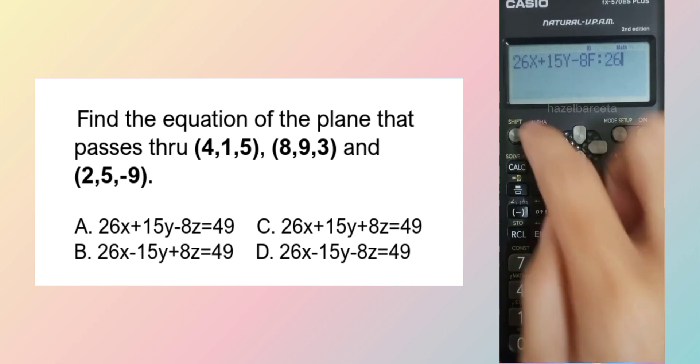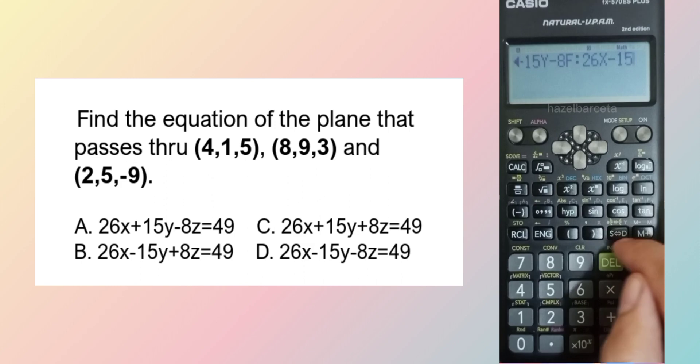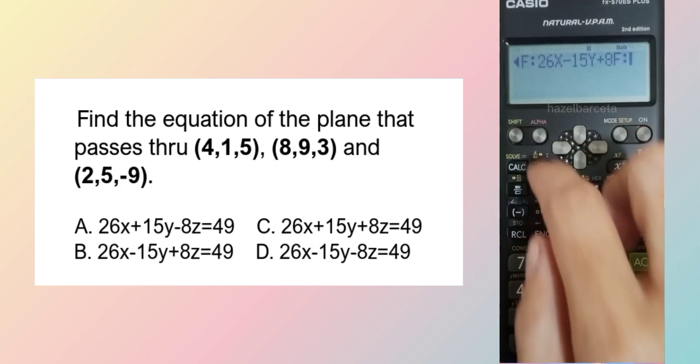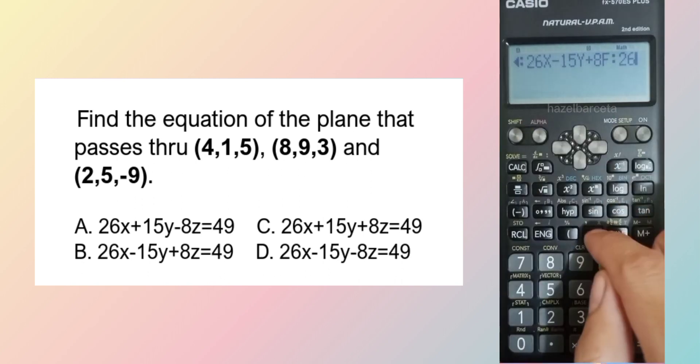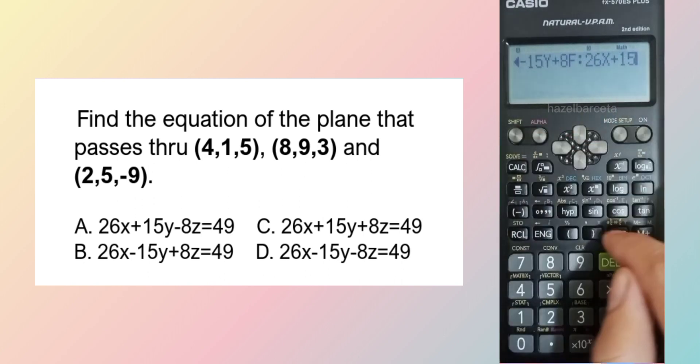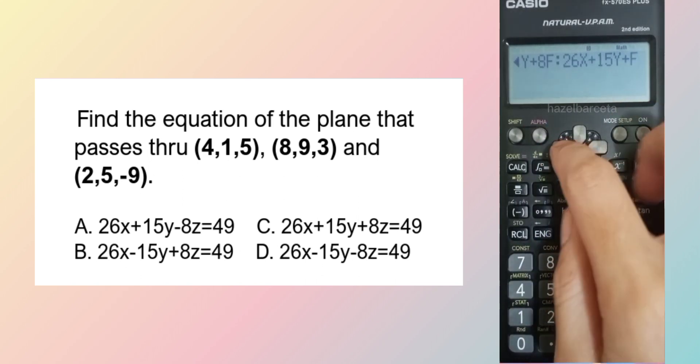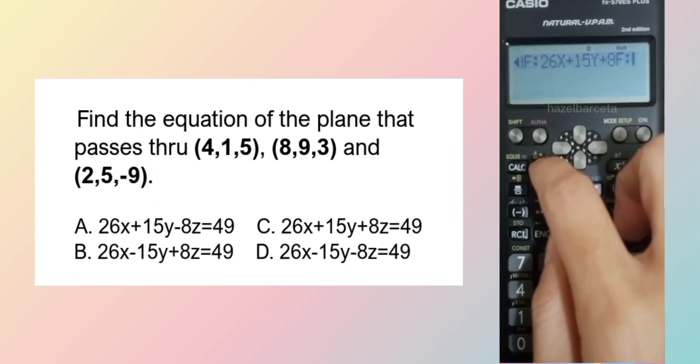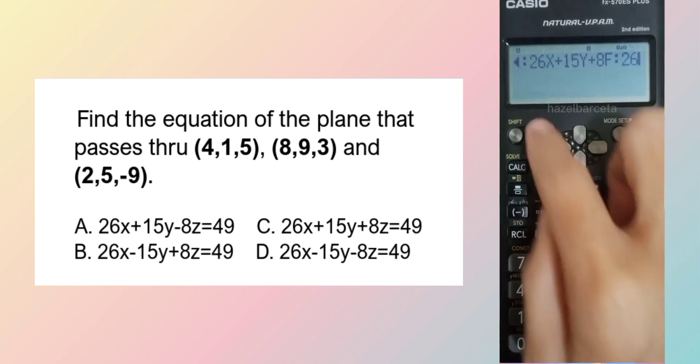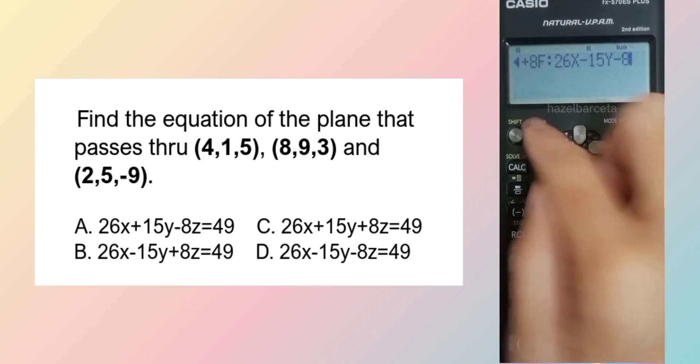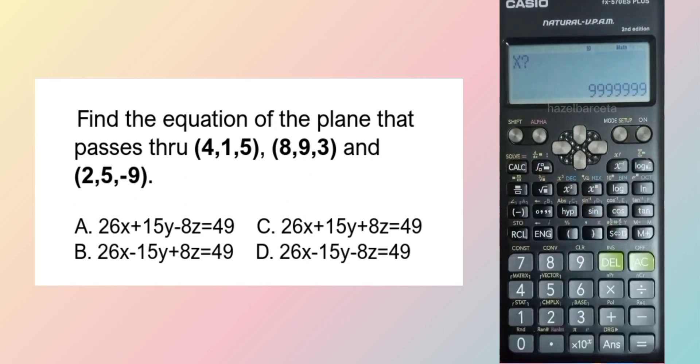Then B: 26x minus 15y plus 8f. C: 26x plus 15y plus 8f. And D: 26x minus 15y minus 8f. Then calc first point: 4, 1, 5. Ang dapat na sagot ay 49. May sagot na 49 minus 8f, so letter D. Same, but we also have to check.